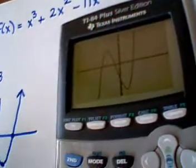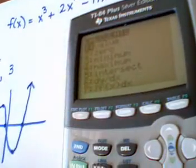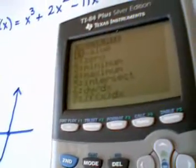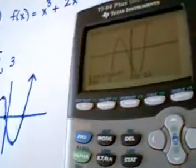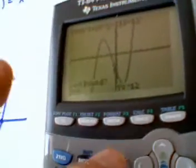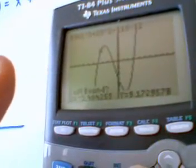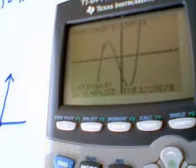So remember to do that. Let's find the maximum first. We're going to go to second function, calculate. Pick option 4 for maximum. Now, we're asked to set a left bound, which means I'm going to move my spider to the left of the hill and hit enter.